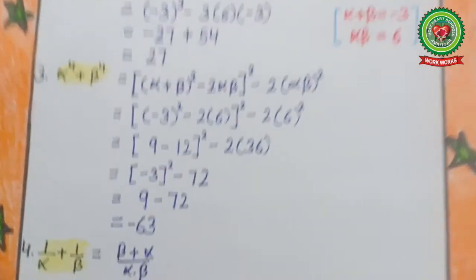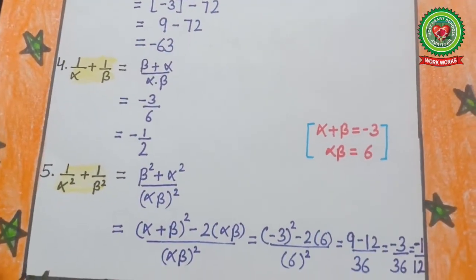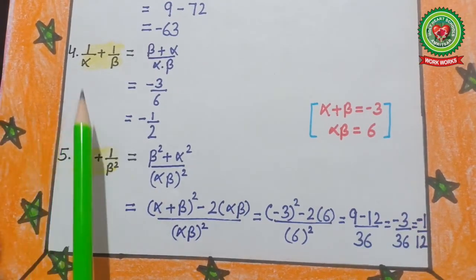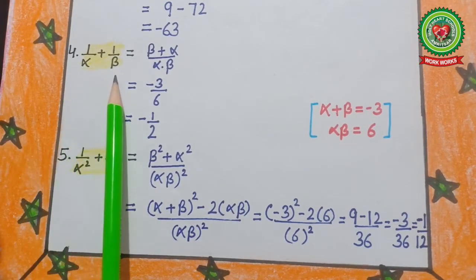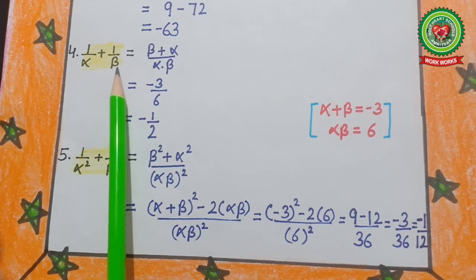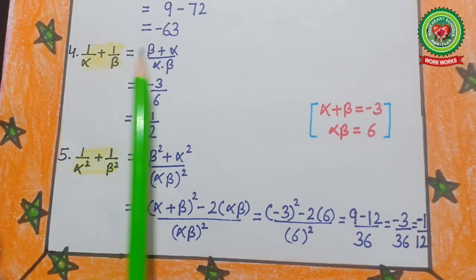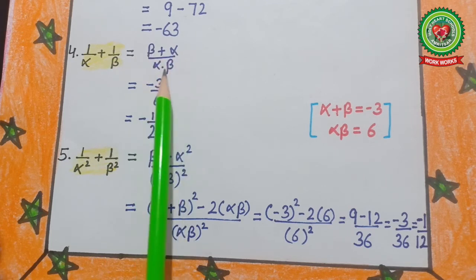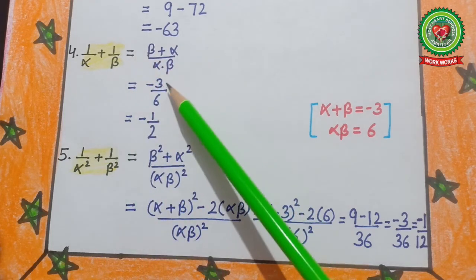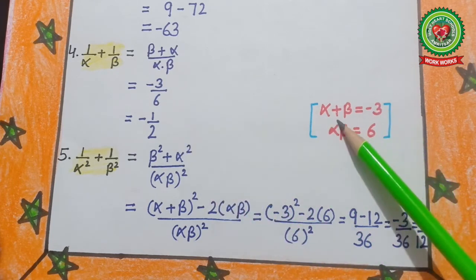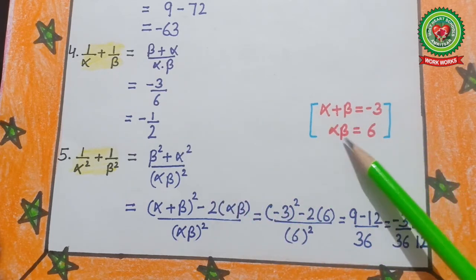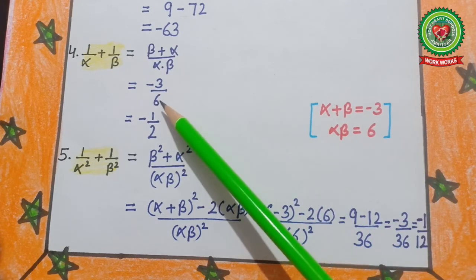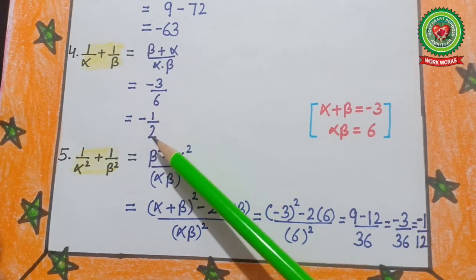Question number 4: 1/α+1/β. After taking LCM, the value is (β+α)/(αβ). Now fill in α+β = −3 and αβ = 6. After simplifying, our answer is −1/2.